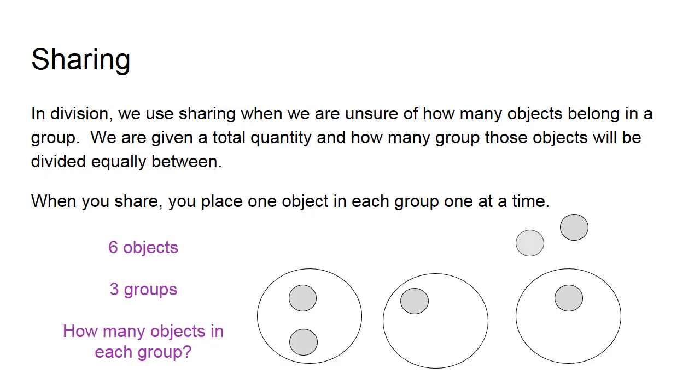So I put one here, one here, and one here. You share until you have no objects left and they have all found a home inside of the groups. Now I can answer that question: How many objects are going to be in each group? I look at the groups and see that there are 2 in each, so my answer is 2.